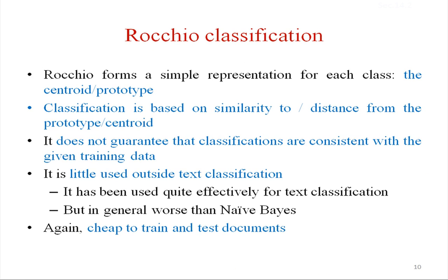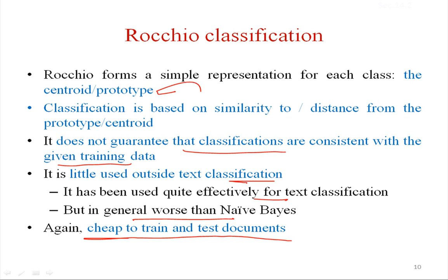The classification rule in Rocchio is to classify points according to the region they fall into. Rocchio forms a simple centroid prototype representation for each class. Classification is based on cosine similarity or distance measures like Euclidean or Manhattan distance. It does not guarantee consistency with training data, as we have seen from the anomalies. It is little used outside text classification but quite effective for text, though generally worse than Naive Bayes. Its main advantage is that it is very cheap to train and test — we just calculate centroids, making the training phase very simple.